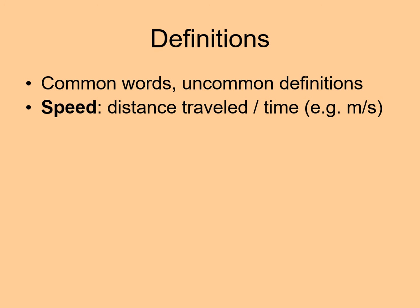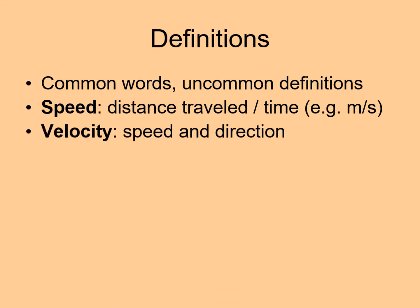The first term we need to define is speed. Speed is the distance something travels divided by the time it travels. The units will be distance over time, such as meters per second. Velocity is both speed and direction — you need to know not just how fast something is going, but also in what direction. If you say you're going 65 miles per hour, you're talking about your speed. If you say you're going 65 miles per hour eastbound, you're talking about your velocity.